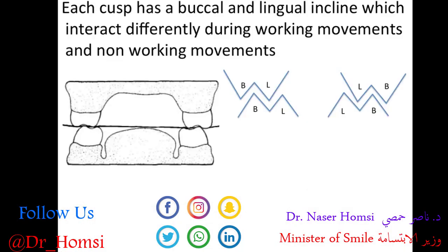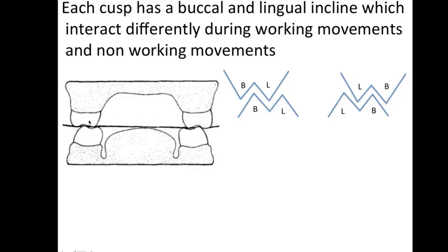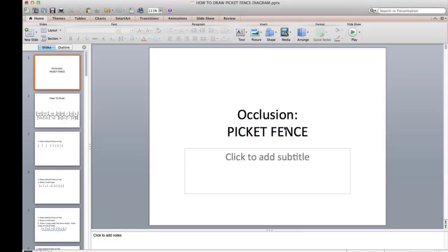Here's a diagram I found helpful when studying for boards — a picture of the teeth as if you're looking through the back of the head. Supporting and non-supporting cusps are easy to visualize here. If you just draw a W and then an M, this represents the upper teeth and then the lower teeth, and you can do it for both sides of the mouth. Each cusp has a buccal and lingual incline which interacts differently during working and non-working movements. A separate lecture will cover working and non-working movements, but these diagrams make it easier to visualize which cusps and inclines are interacting.